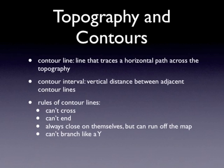Contour lines can never cross. They can never end. They always close on themselves, but can run off the map. And they can't branch like a Y. Thanks for watching. Bye-bye.